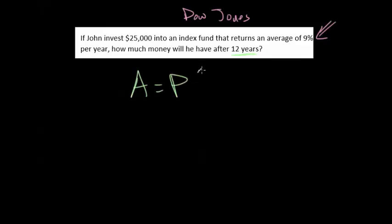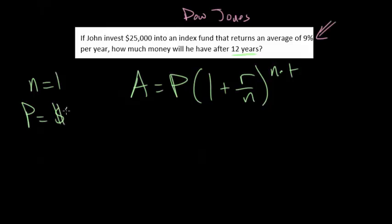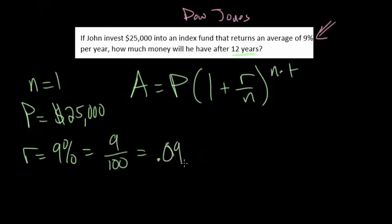We want to use the formula: A equals P times 1 plus R over N to the N times T. But we're compounding this yearly, so we can just assume that we have an N value of 1. We know we're starting with $25,000, so that's our principal. Our rate is that 9%, but we want to change this to a decimal. The word percent just means divide by 100. So 9% is the same as 9 over 100, which equals 0.09. We know we want to calculate this after 12 years.